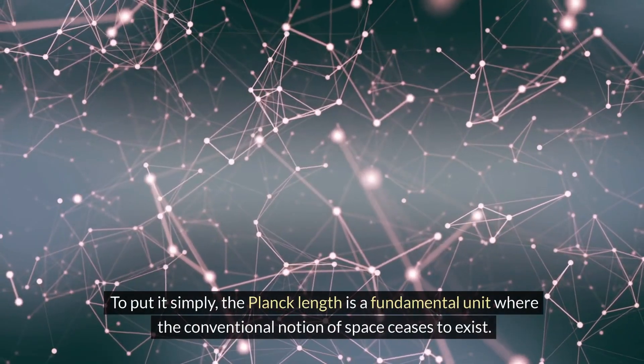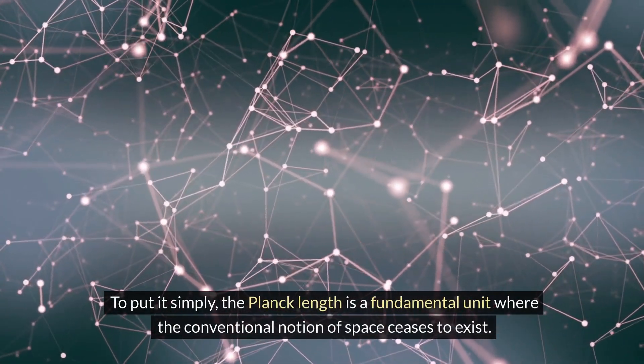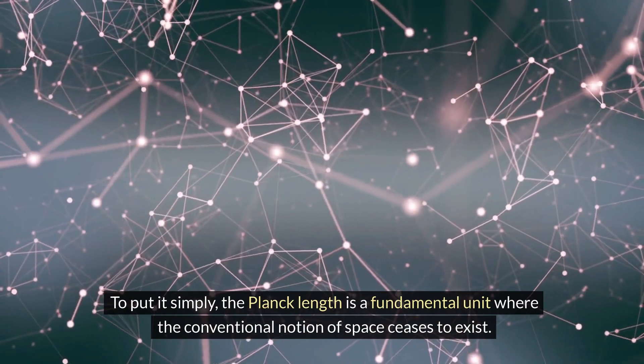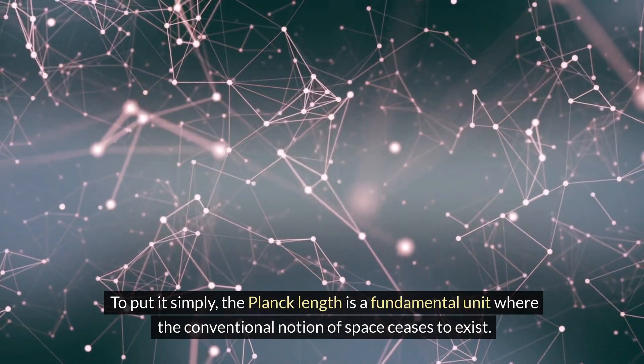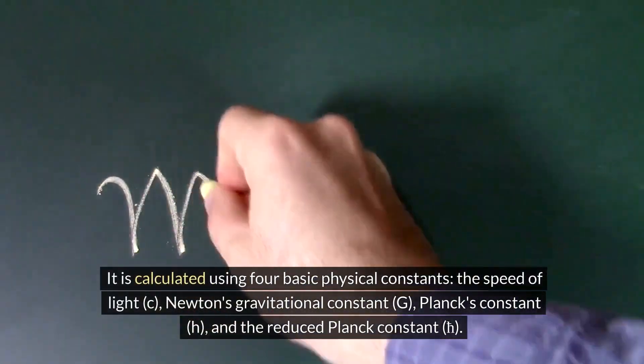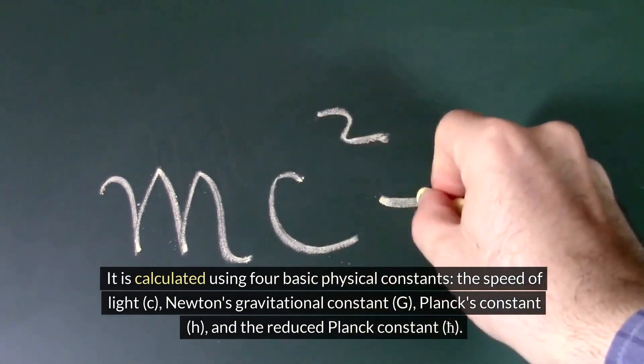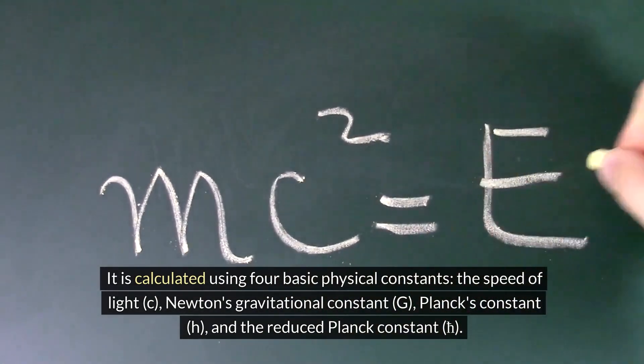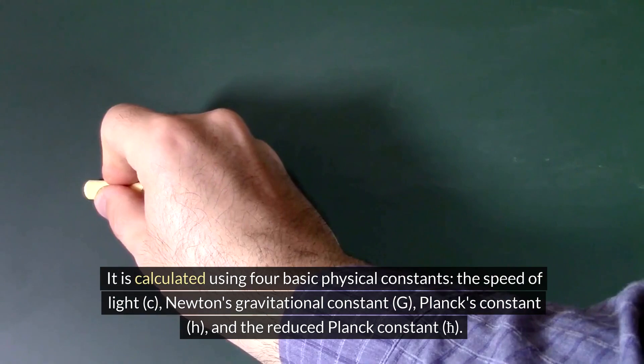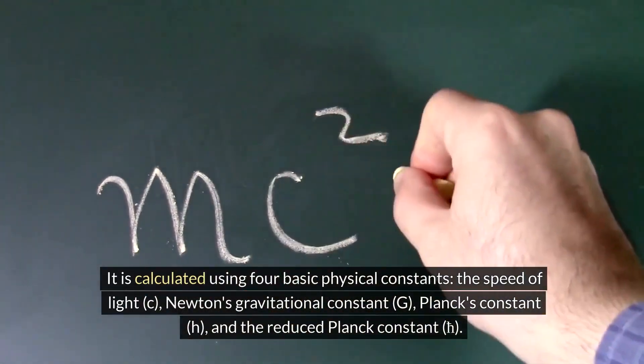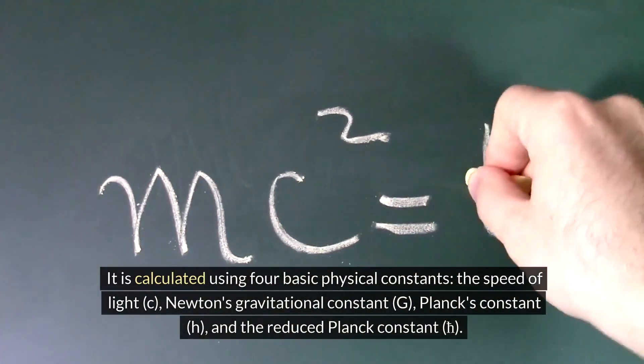To put it simply, the Planck length is a fundamental unit where the conventional notion of space ceases to exist. It is calculated using four basic physical constants: the speed of light C, Newton's gravitational constant G, Planck's constant H, and a reduced Planck constant H.